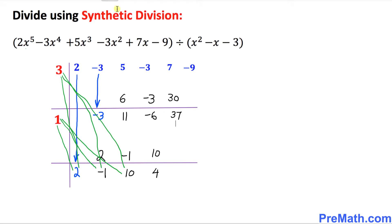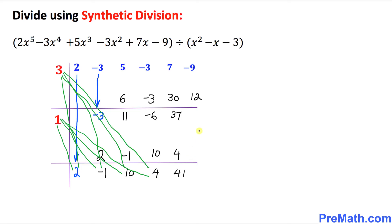Finally, we're going to do one more time. Go ahead and multiply with 4 — 1 times 4 is going to be 4, right up here. Likewise, this 3 is going to get multiplied by 4 — 3 times 4 is going to be 12, right up here. Now we're going to add: 37 plus 4 is going to be 41, and negative 9 plus 12 is going to be 3.